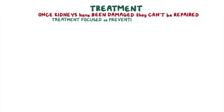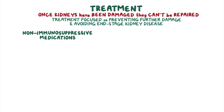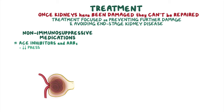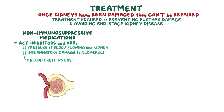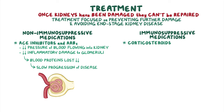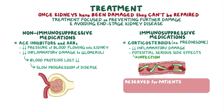Once the kidneys have been damaged, they can't be repaired. So treatment is mainly focused on preventing further damage and avoiding end-stage kidney disease. Non-immunosuppressive medications that reduce blood pressure and scarring in the glomeruli — specifically ACE inhibitors and angiotensin receptor blockers, or ARBs — are the cornerstone of treatment. These medications help by reducing the pressure of blood flowing into the kidneys and decreasing the amount of inflammatory damage in the glomeruli, so the amount of blood proteins lost into the urine usually decreases. Reducing proteinuria slows progression of the disease. Immunosuppressive medications like corticosteroids — for example, prednisone — can reduce the inflammatory damage in the glomeruli, but due to potential serious side effects like infection, such treatment is reserved for patients with severe inflammatory damage and rapidly declining kidney function.